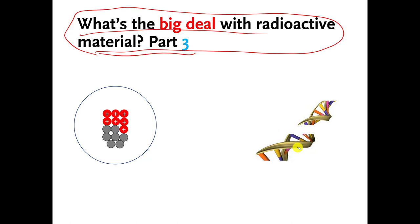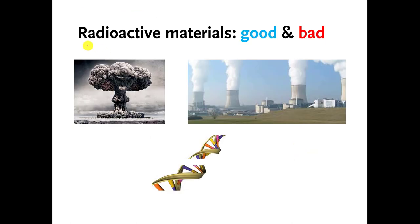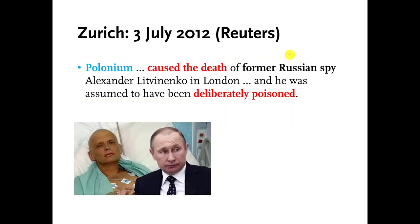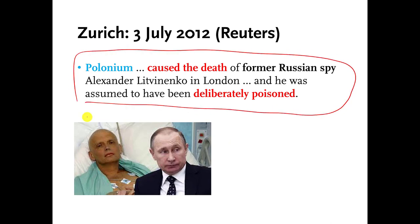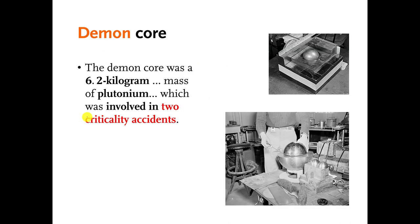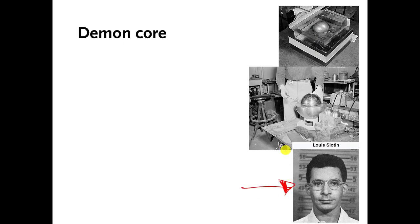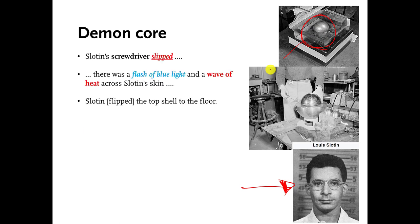Radioactive materials can be used for good and for bad. Radioactive materials have been used to kill people — apparently the Russians seem to enjoy that method. This is a big chunk of radioactive material that was involved in killing at least two people and harming others, and because of that it's called the demon core. This person ended up dead because he did not treat this thing with enough respect, essentially killing himself. But that's for the on-ground class, so you can read about it if you want.